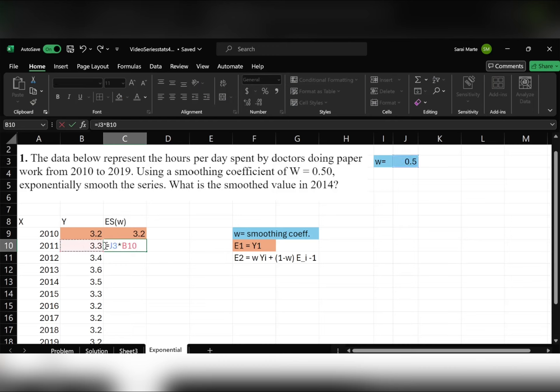times the first Y value, plus 1 minus W, and then times the last E value, which is this one, the previous. And if we click enter, that's that.